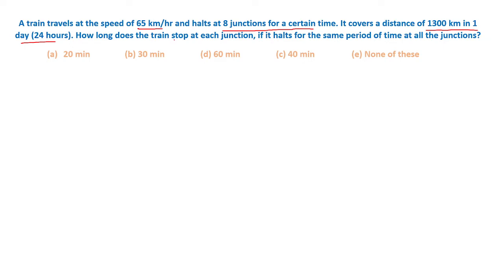How long does the train stop at each junction if it halts for the same period of time at all the junctions? We have a train traveling between two destinations that are 1300 km apart, and the train halts at 8 junctions.